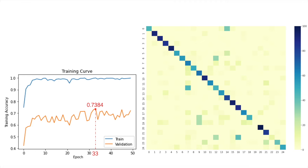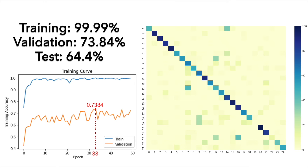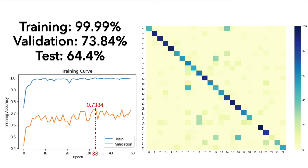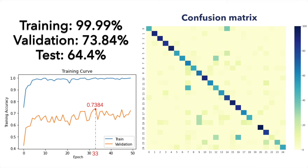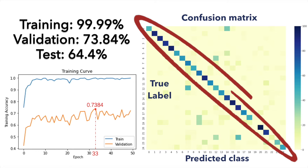The training curve over 50 epochs is shown on the left. We achieved almost 100% training accuracy. The validation accuracy was 73.84% at epoch 33, and the corresponding test accuracy was 64.4%, which outperforms our baseline model's 8.6% accuracy. The test results are illustrated by the confusion matrix on the right, where the y-axis is the true label and the x-axis is the model predicted label. It shows that our model does well on most of the 25 classes.